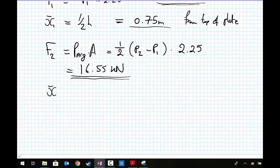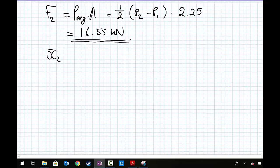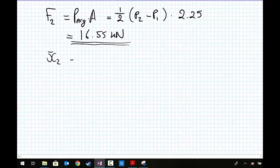X bar 2, measured from the top of the plate, equals two-thirds multiplied by the height of the plate, which is 1.5, so equals 1 meter from the top of the plate. Make your calculations easier for someone to read.